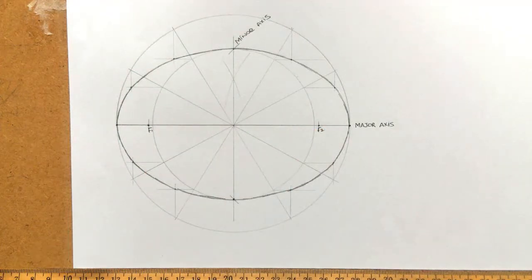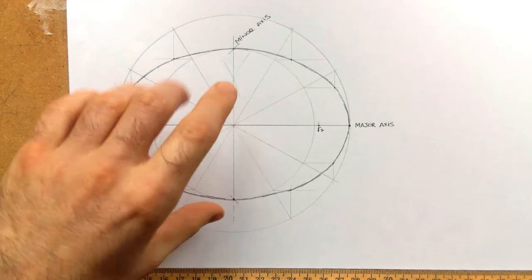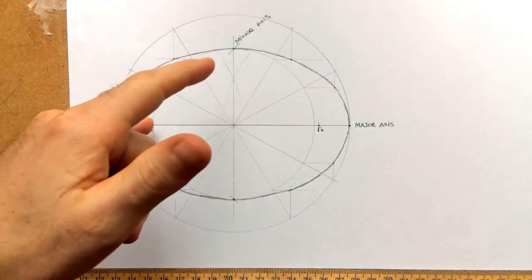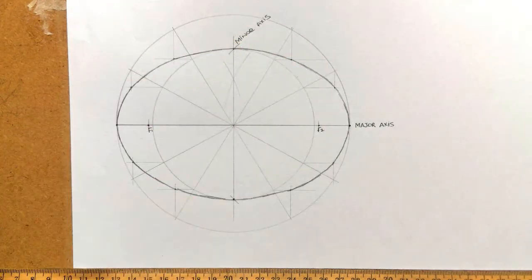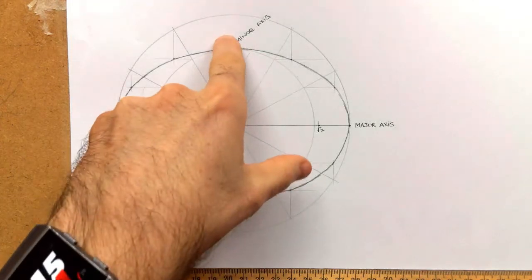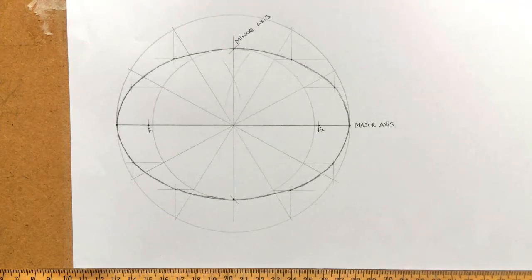We applied the principle of finding the focal points from when given the major and minor: half the major from the minor gives us a focal point. Therefore it works backwards — half the major from the focal point will give us the minor axis. In the next question, I'm actually going to be completing an ellipse given just the focal points and a point on the curve.